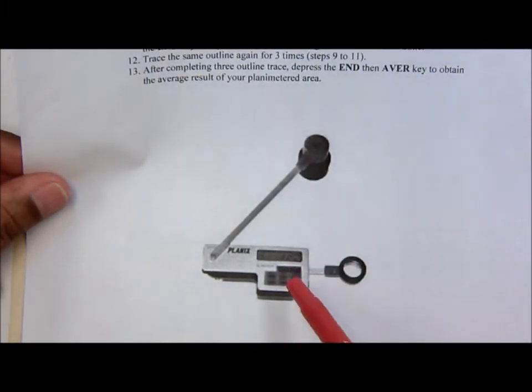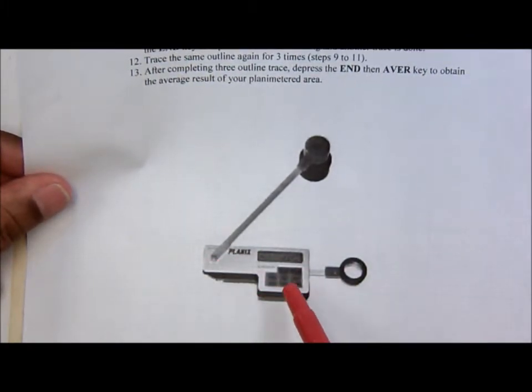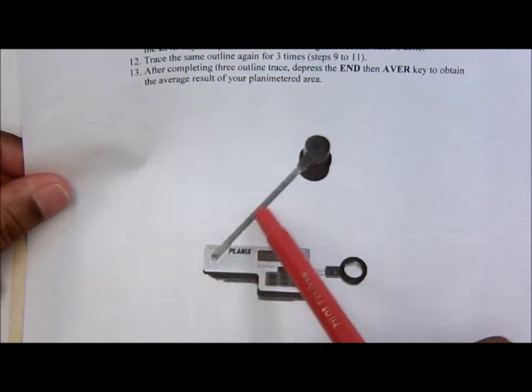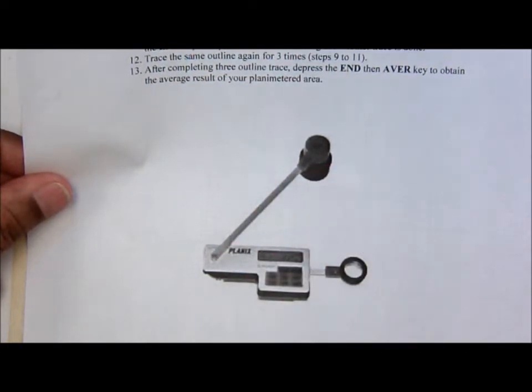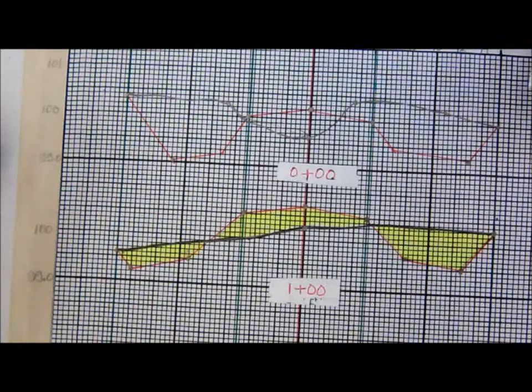The planimeter itself is shown here and there are three parts to it. There's the actual planimeter, there's the control arm, and there's a weight that the control arm actually fits into. Let's go and look at the instrument itself.